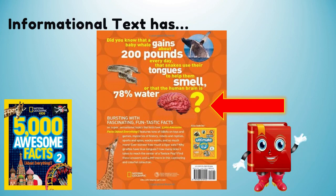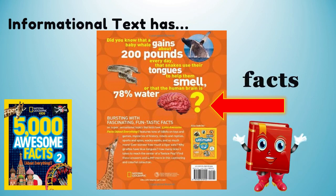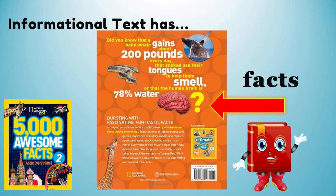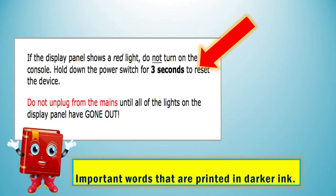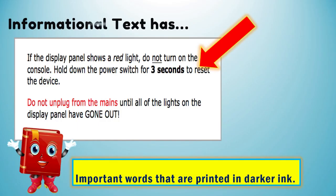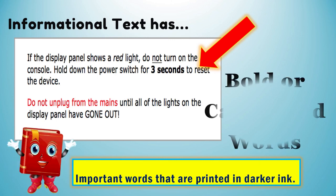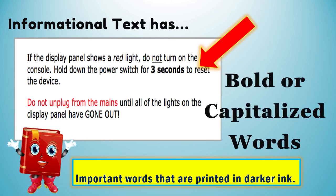Informational text also has facts — a thing that is known or proved to be true. It is not an opinion. The next feature of informational text is bold or capitalized words: important words that are printed in darker ink.